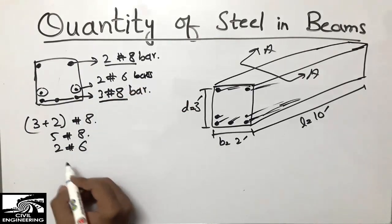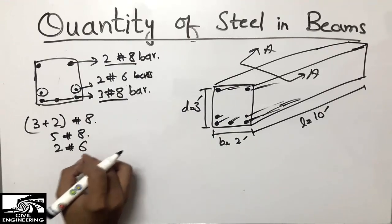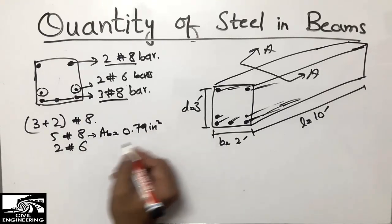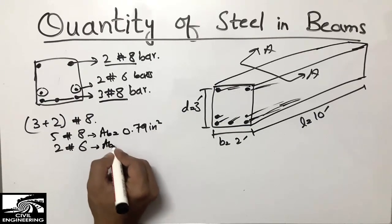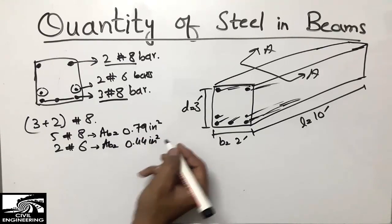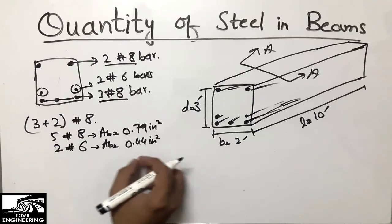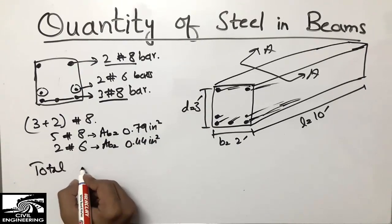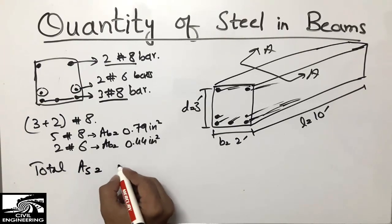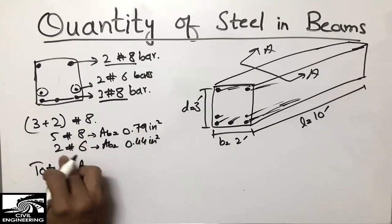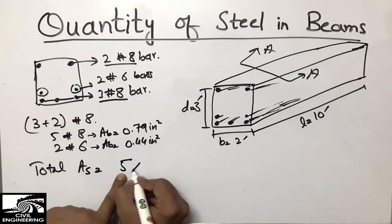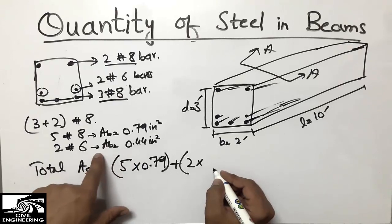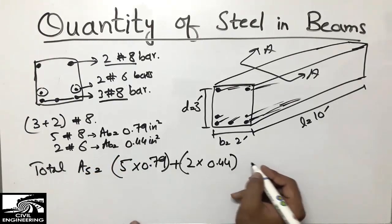Five number-8 bars and two number-6 bars are used. We need to know the area of each bar type. The area of a number-8 bar is 0.79 inch square, and the area of a number-6 bar is 0.44 inch square. Once you know the areas, it's simple to calculate the total steel quantity.